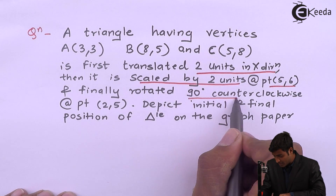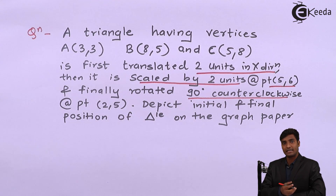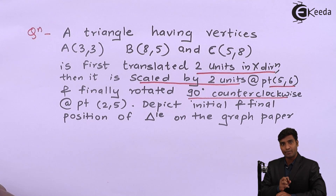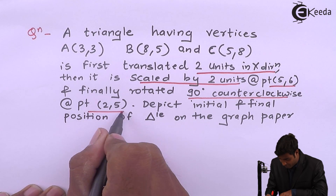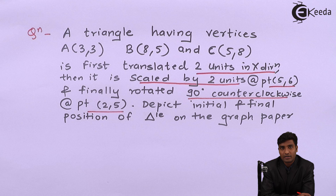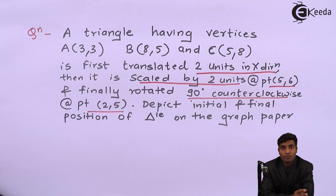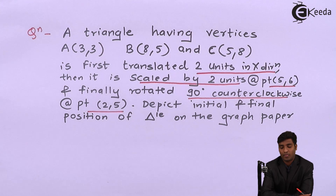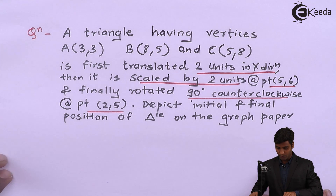Finally, the triangle has been rotated 90 degrees counterclockwise, that is anticlockwise, about an arbitrary point (2, 5). We are solving problems related to scaling and rotation about a fixed point. Previously we solved these about the origin, but last time we derived matrices for scaling and rotation about a fixed point, so I will directly use those matrices.